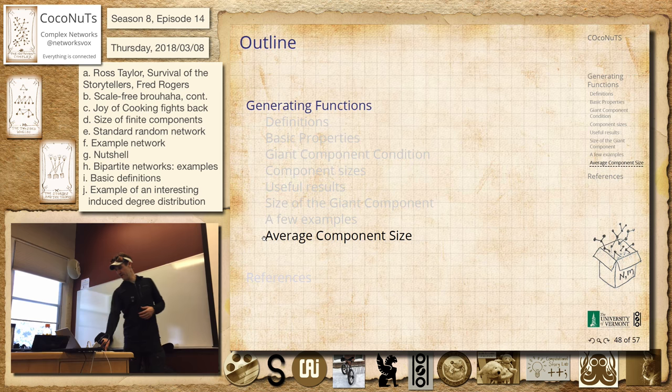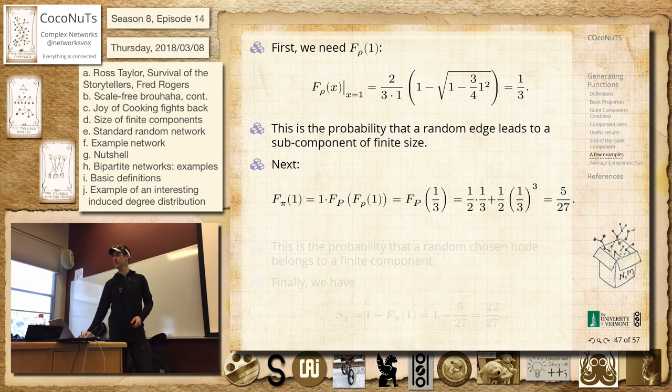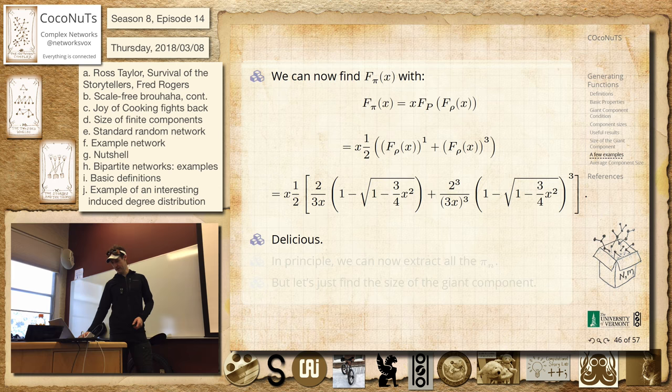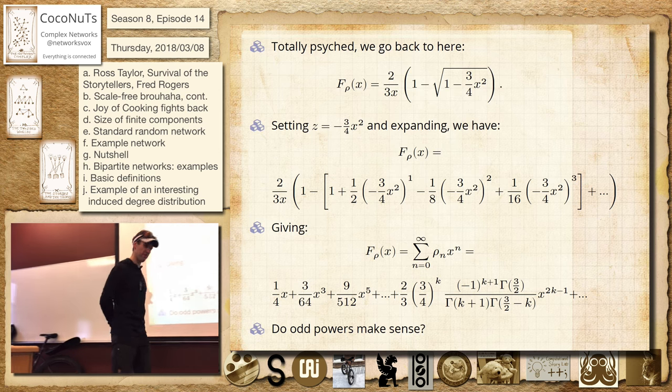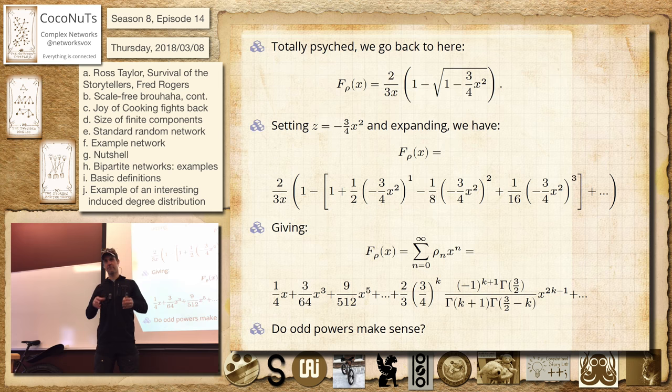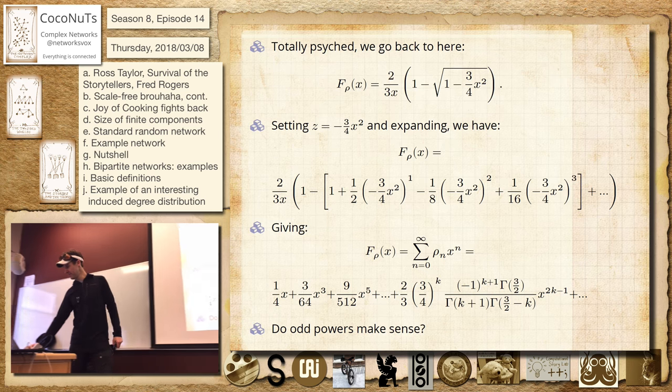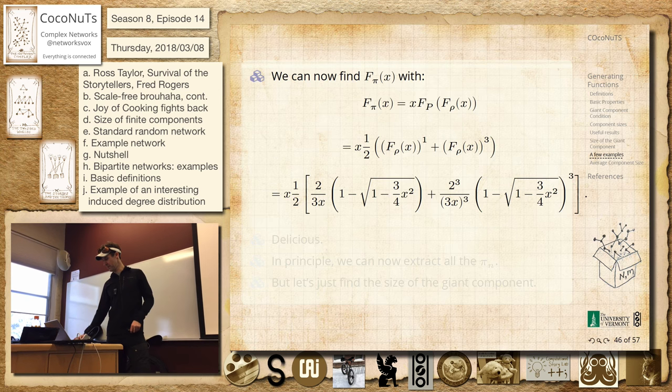We did this crazy generating function thing and a nice little example. It was a little bananas, but we had this whole business of a mixture network where half the nodes have one friend and half have three friends. We imagined mixing them all up and were able to find quite detailed results about the components, the sizes of connected components.